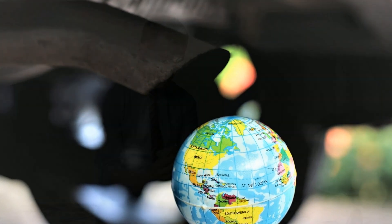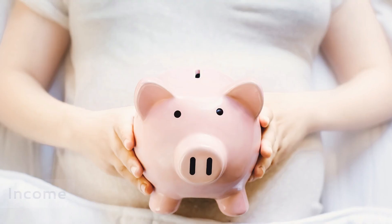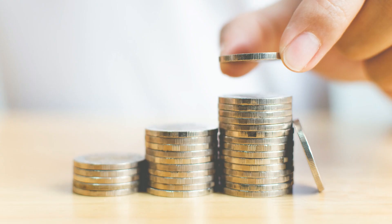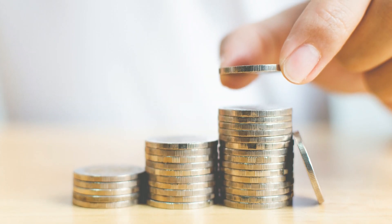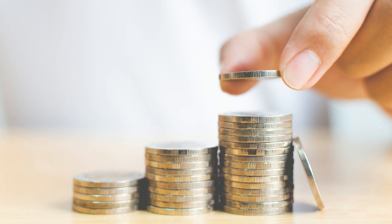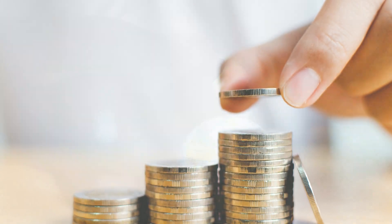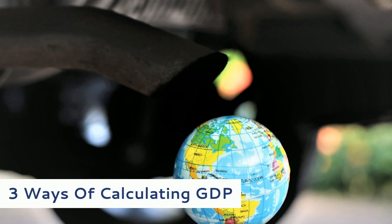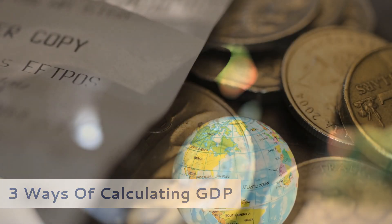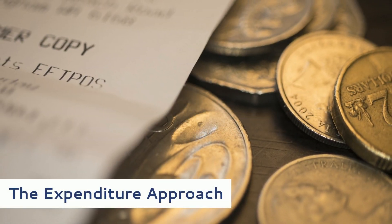GDP can be calculated in three ways: using expenditures, production, or incomes. It can be adjusted for inflation and population to provide deeper insights. Now let's take a look at those three ways of calculating GDP. The first way is the expenditure approach.